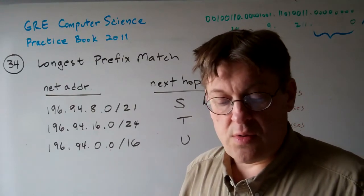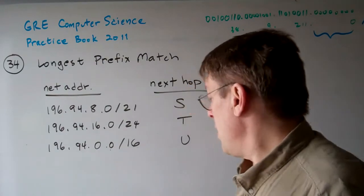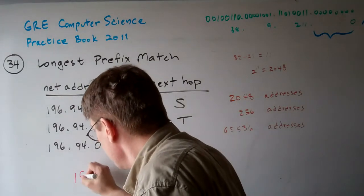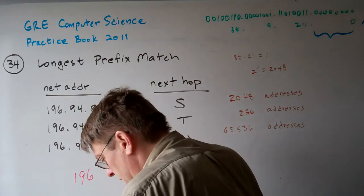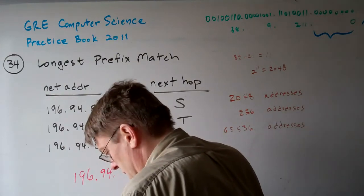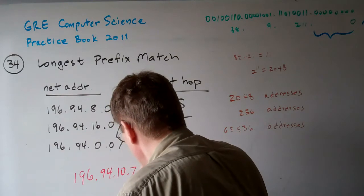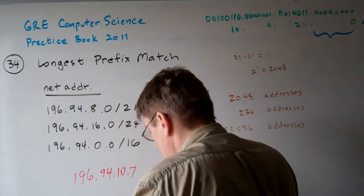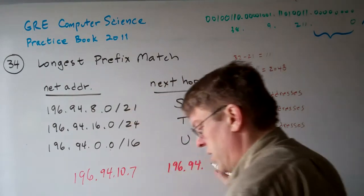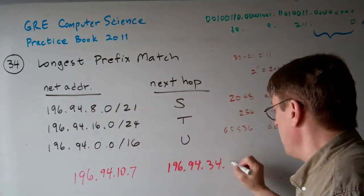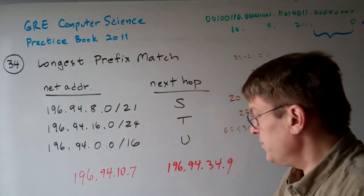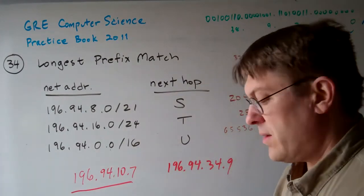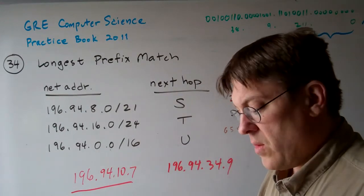What are the next hops for each of the following two destination addresses? One of the destination addresses is 196.94.10.7, and the other one is 196.94.34.9. Now, for 196.94.10.7, what's the next hop?